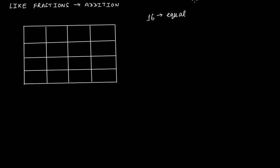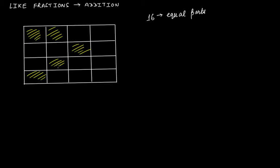Now I'll shade five of these equal parts in yellow. If I ask you what fraction these yellow shaded portions make of the whole, you'll say the total number of equal parts is 16, and since five portions are shaded, the fraction is 5 by 16.